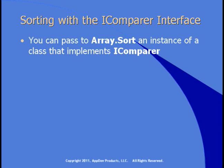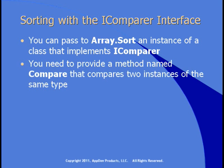One thing you can do is create a class yourself that implements iComparer, and within that class provide a method named compare that performs the comparison. Then you can pass that to the sort method of the array and sort an array of classes. Let's go see how this works, and then we'll also see how you can use generic methods to make this work efficiently.